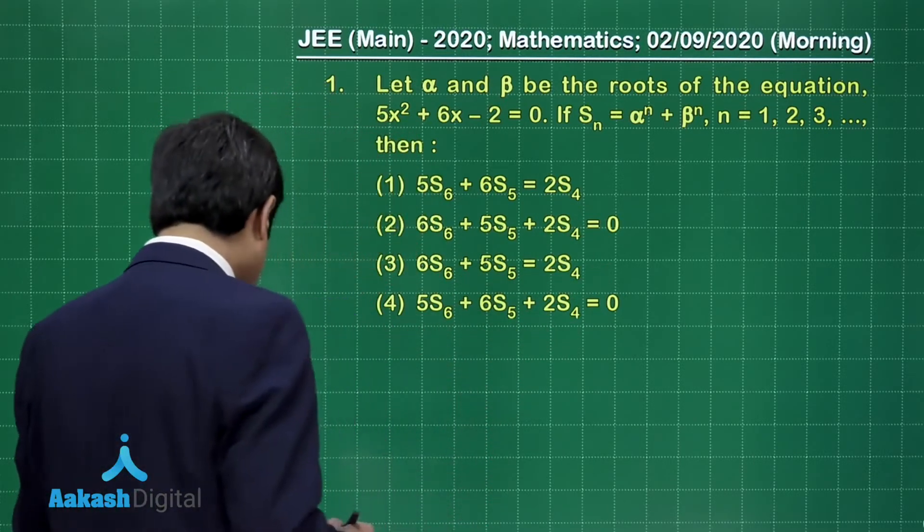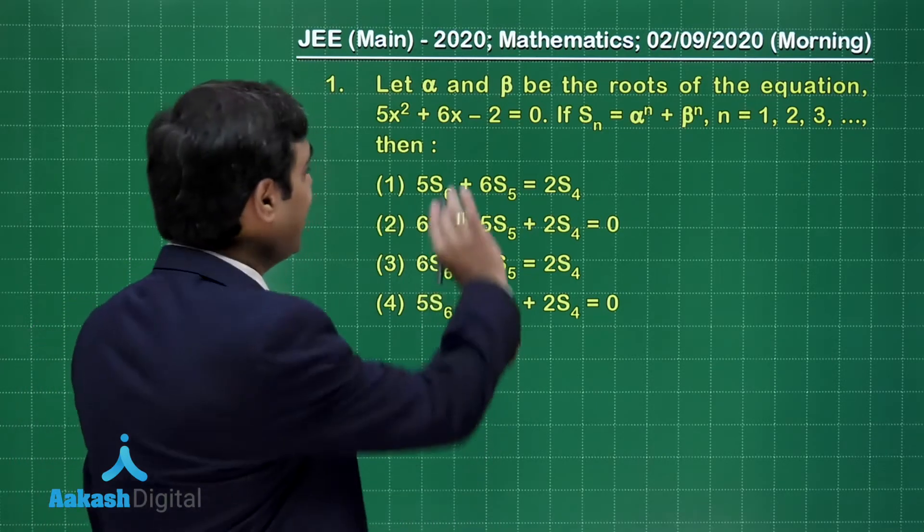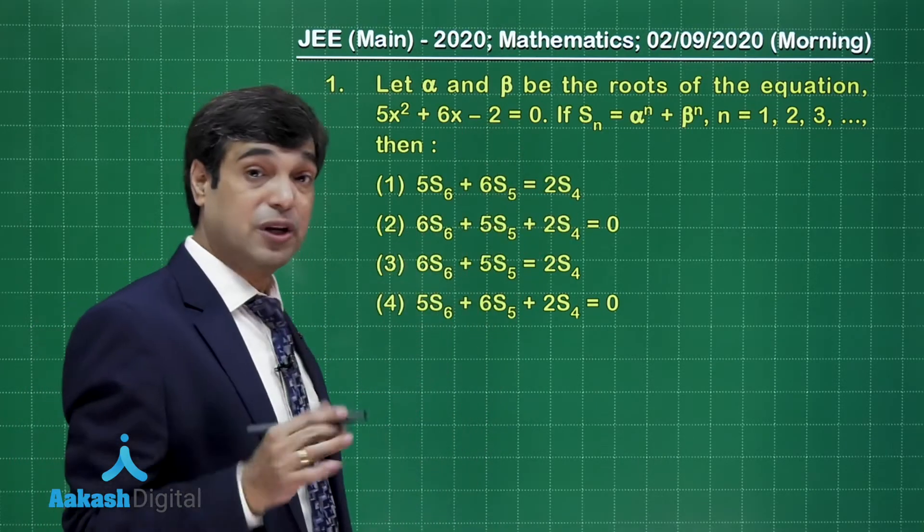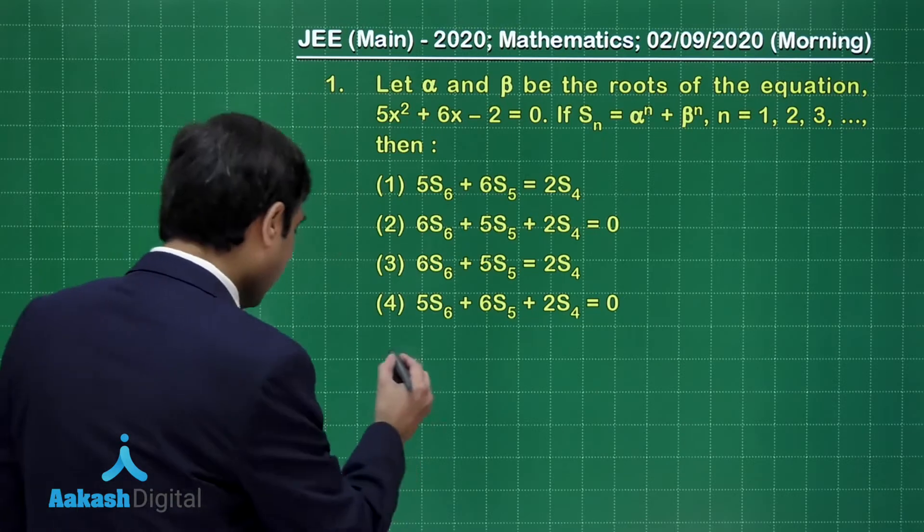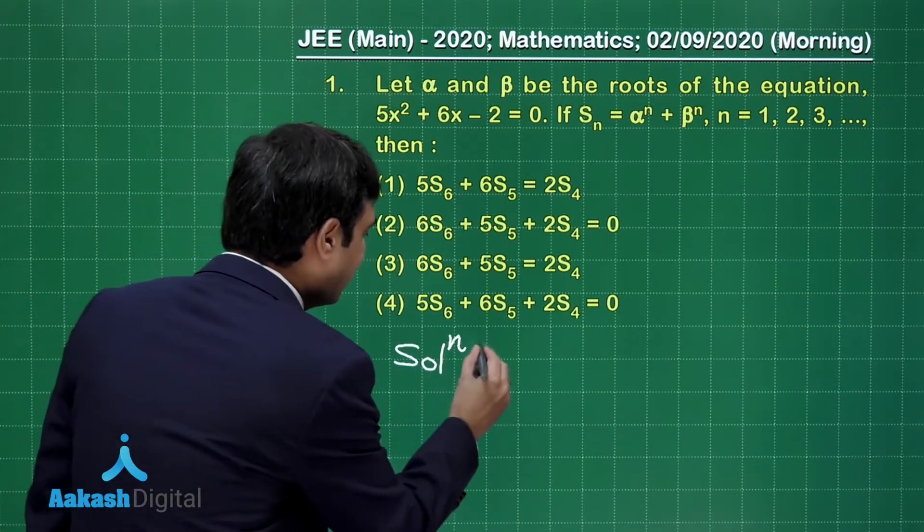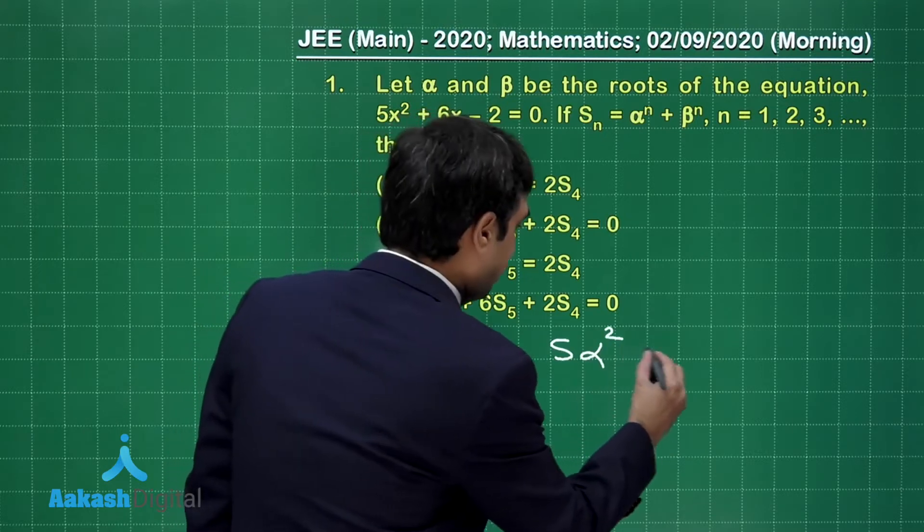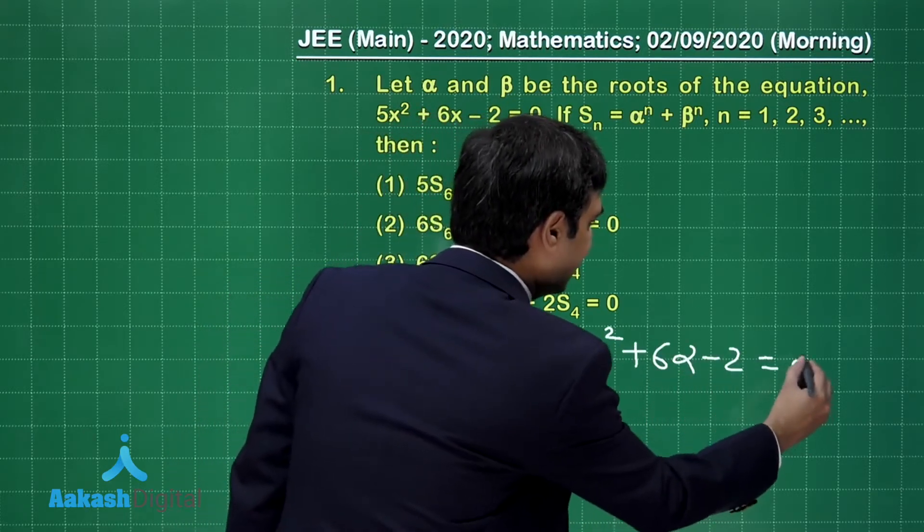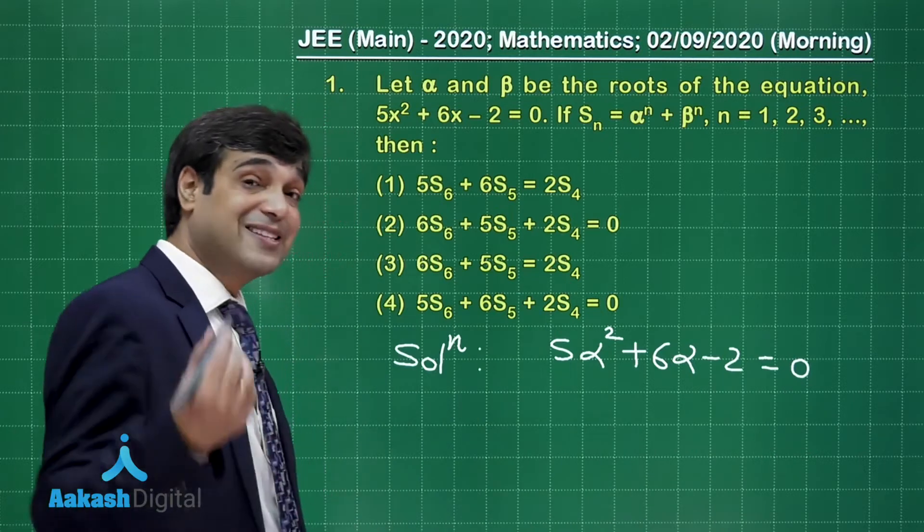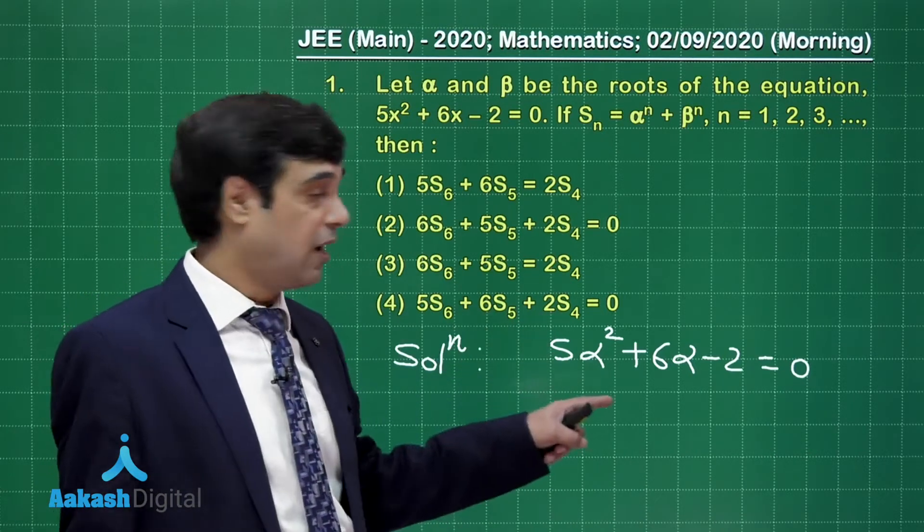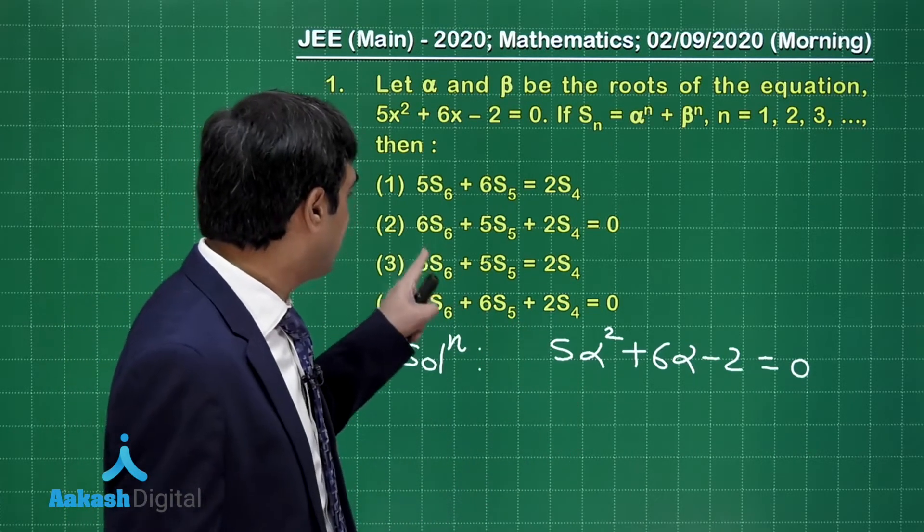Since it is clearly given that alpha and beta are the roots, what's the result? We can clearly say that 5α² + 6α - 2 = 0. In the similar fashion you can talk about beta.